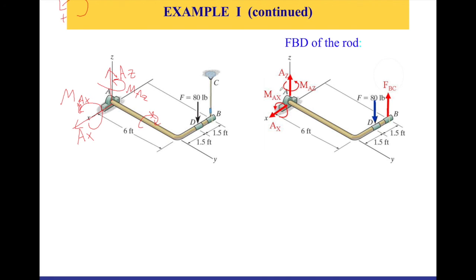Looking at the bearing, we now have two reactive forces (Ax and Az) and two couple moments (Max and Maz) as unknowns in the free body diagram. For the cable, I call the tension FBC, and I have the 80-pound force going down. So in the free body diagram I have: Ax, Az, FBC, Max, and Maz — that's five unknowns. Since five is less than six, we can solve the system. This completes the free body diagram of the rigid body in three dimensions.